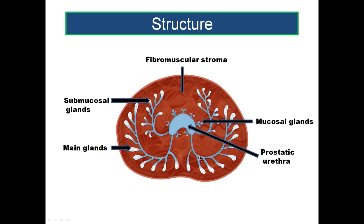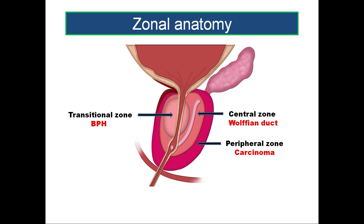The main glands occupy the lateral and posterior aspects of the gland. These main glands open into the prostatic sinus on either side of the urethral crest and the verumontanum. At present, three zones of the prostate are most important surgically. The outermost part is called the peripheral zone — it is cup-shaped, present laterally and posteriorly on either side, and connected anteriorly by the fibromuscular stroma.